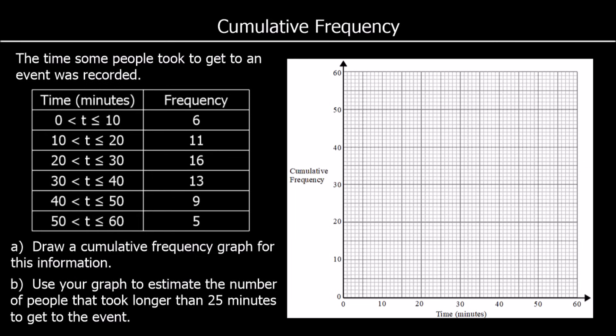Another example. The time it took some people to get to an event was recorded. This time we've got more groups and we're going straight from the frequency to the graph, so we're going to have to have a running total — a cumulative frequency column. Zero to 10 is 6 people. And then zero to 20 is going to be 6 plus 11, which is 17. Then zero to 30 — add on the 16 — so 17 plus 16 is 33.